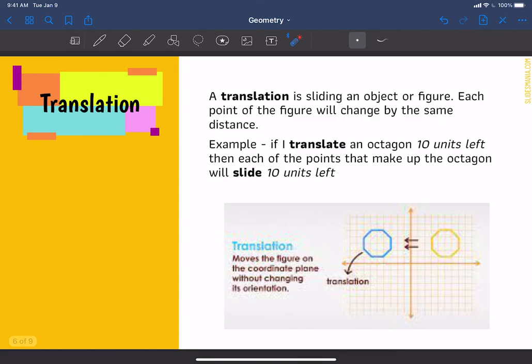So first thing is a translation. So basically all you're doing is moving the figure on your coordinate plane, but without changing the orientation. So you are sliding it all over the coordinate plane, but you're not changing the way it's facing.